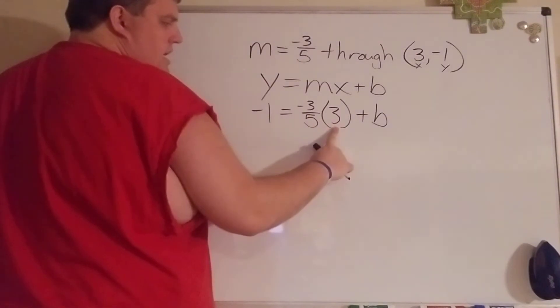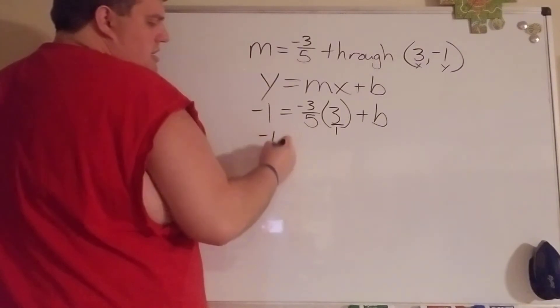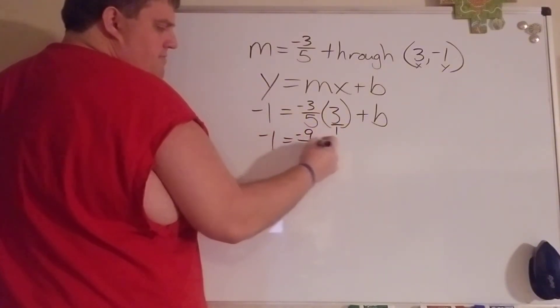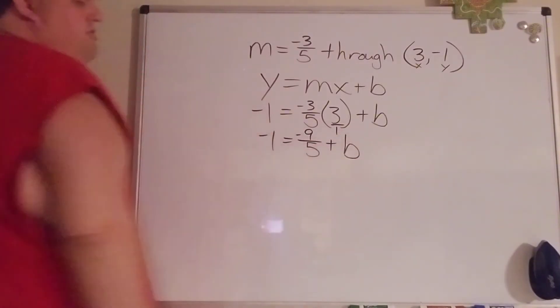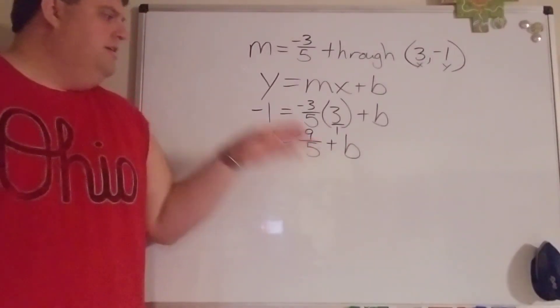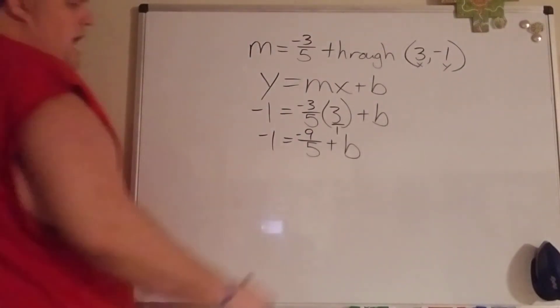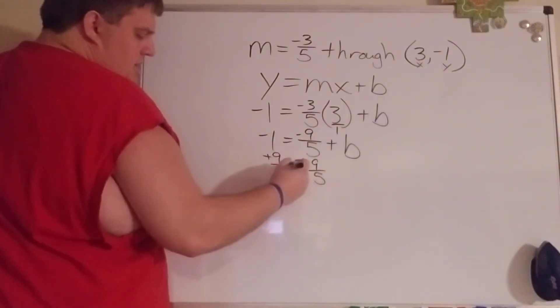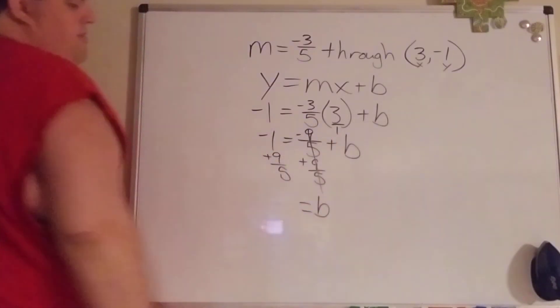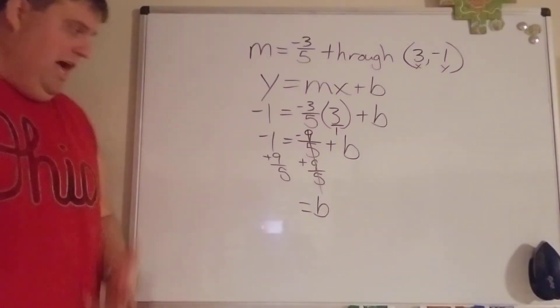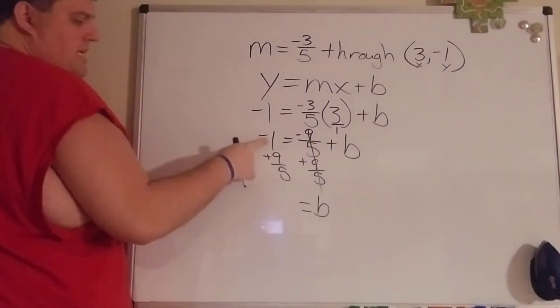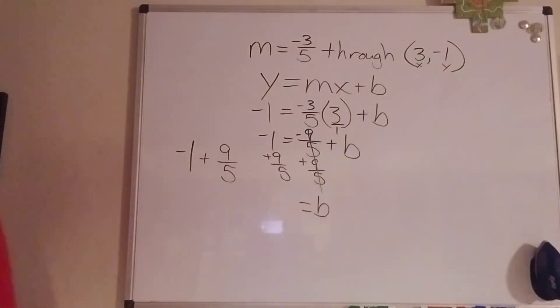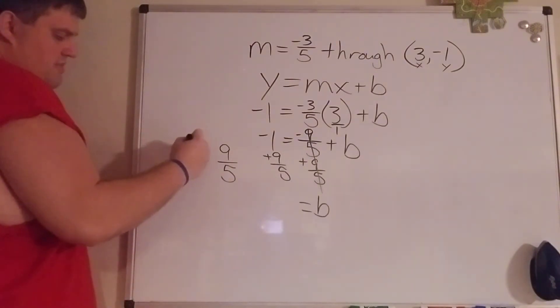Negative three-fifths times three. If I'm multiplying fractions, you can use your calculator obviously, but I go straight across so I just put three over one to make it a fraction. Negative three times positive three is negative nine, five times one is five. Now if I want to get b by itself, we got to get rid of negative nine-fifths, so since it's negative, that means add nine-fifths. We need to make negative one have common denominators when we add these two numbers, so I want to turn negative one into fifths. Since that's one, that's just going to be negative five-fifths.